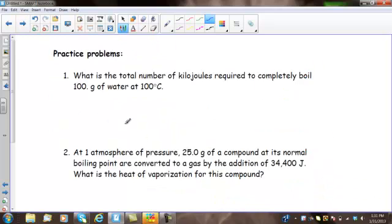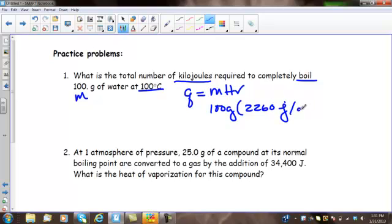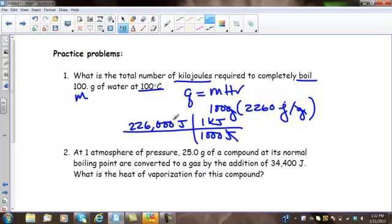Let's try another problem. What is the total number of kilojoules? Again, they want us to find kilojoules. Required to completely boil 100 grams of water. There's our mass at 100 degrees Celsius. So boiling 100 degrees Celsius clues us in that it's Q equals MH sub V again. 100 grams. H sub V is 2260 joules per gram. My grams cancel. So 100 times 2260 is going to give me 226,000 joules. And again, they asked for kilojoules. So 1,000 joules is 1 kilojoule. Divide by 1,000 and I get 226 kilojoules.